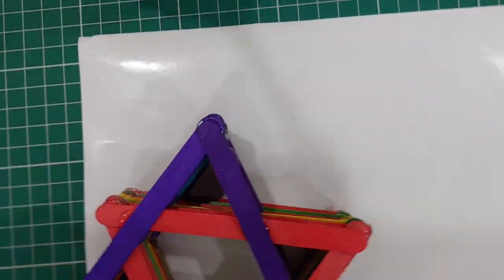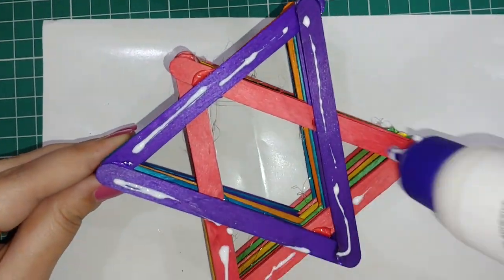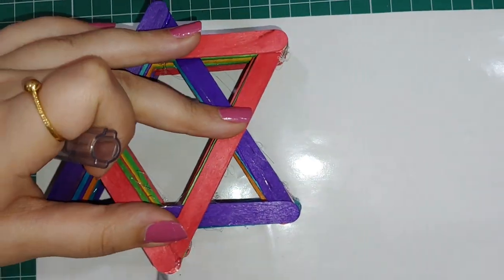Now we have to make a base for the pen stand and you can do as shown. Just stick it on a paper and cut out accordingly and your pen stand is done.